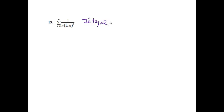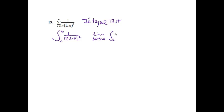Number 19: the series from n equals 2 to infinity of 1 over n times (ln n)². You could do a comparison test, but this is actually a good integral test setup — the derivative of ln is sitting in the problem. I'm going to use the integral test, which means I want to find the integral from 2 to infinity. It does work starting at 2, so we're fine. We'll find the limit as w approaches infinity of the integral from 2 to w of 1 over n·(ln n)². I let u equal the natural log of n.